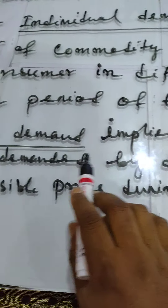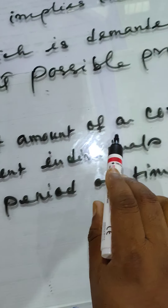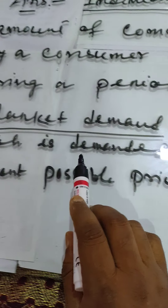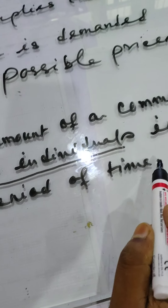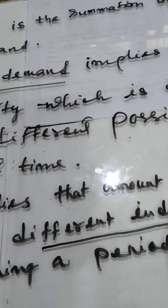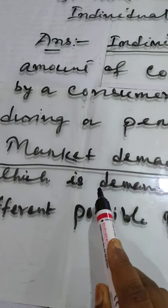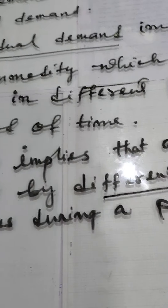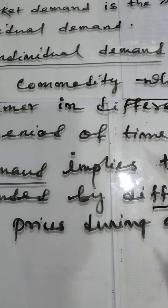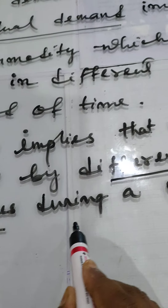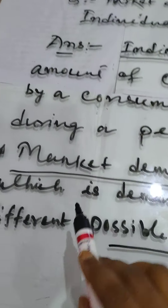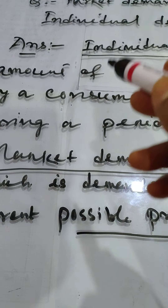Next, we move to the definition of market demand. Market demand implies that amount of a commodity which is demanded by different individuals at different possible prices during a period of time. There is a slight difference between individual demand and market demand: in individual demand the consumer is one or single, but in market demand the number of consumers is more than one. When many consumers demand a particular commodity at different possible prices during a period of time, it is called market demand.